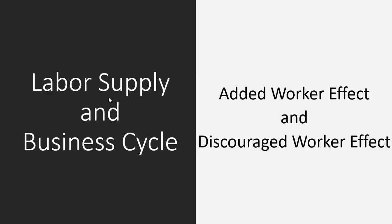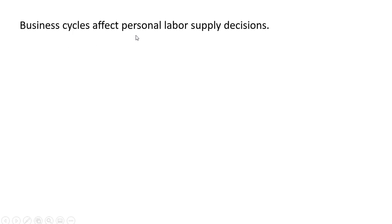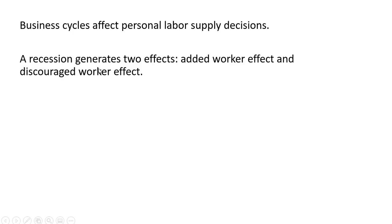In this video we're going to look at labor supply in the business cycle, in particular the added worker effect and the discouraged worker effect. Business cycles affect personal labor supply decisions. A recession generates two effects: an added worker effect and a discouraged worker effect.